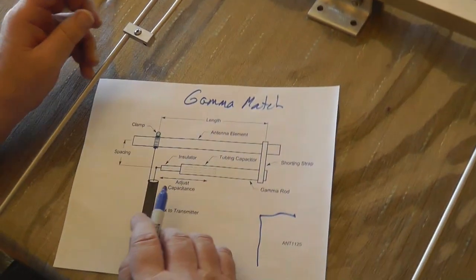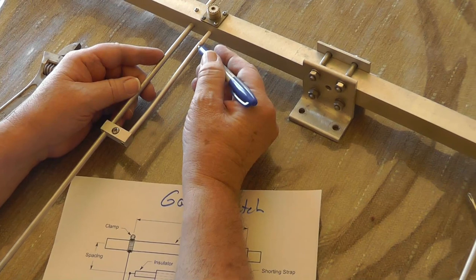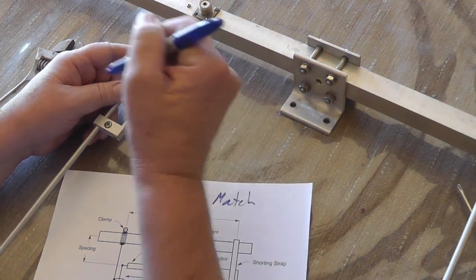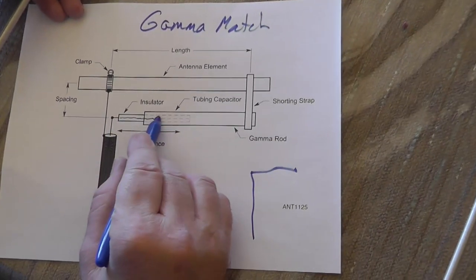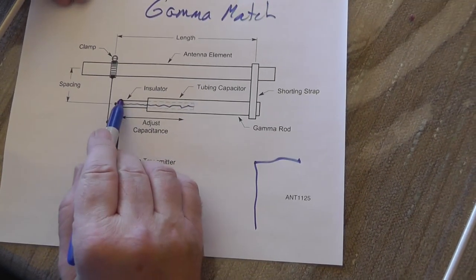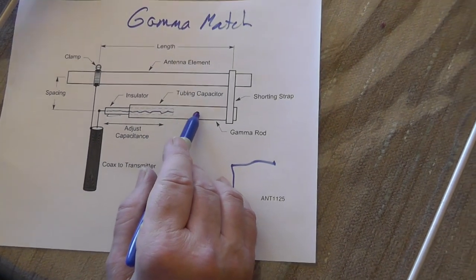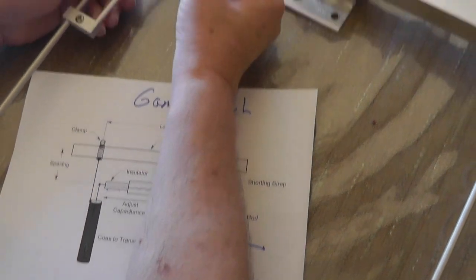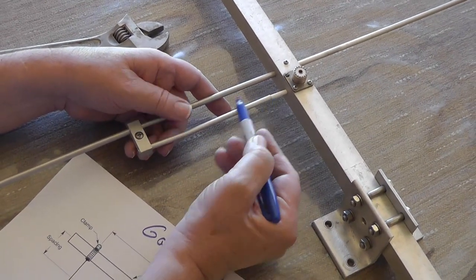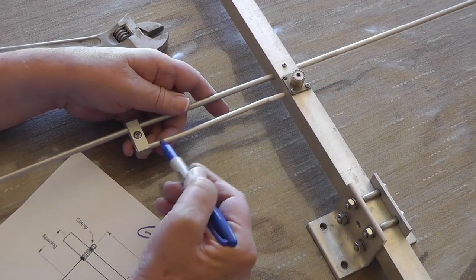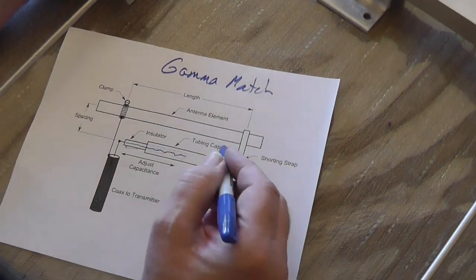And you use a gamma match which consists of a capacitor. I'll show you how the capacitor is formed. It's a tube right there with an insulator around it pushed into a bigger tube and that acts as an adjustable capacitor depending on how much of the inner part is exposed.